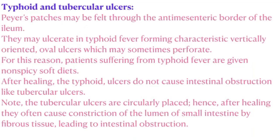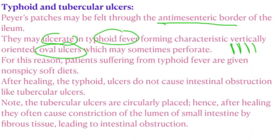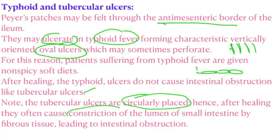Typhoid and tubercular ulcers: Peyer's patches may fall through the antimesenteric border of the ileum. In typhoid fever, they may ulcerate, forming characteristic vertically oriented oval ulcers which may sometimes perforate. For this reason, patients suffering from typhoid fever are given non-spicy soft diets. After healing, typhoid ulcers do not cause intestinal obstruction. Tubercular ulcers, however, are circularly placed; after healing they often cause constriction of the lumen by fibrous tissue, leading to intestinal obstruction.